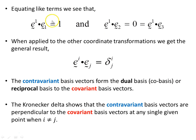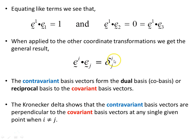Equating like terms, we see that e^1 · e_1 (upper index dotted with lower index) equals 1, and the others equal 0. Applying this to all other coordinate transformations, we get the general result that e^i · e_j equals the Kronecker delta δ^i_j. This is 1 when i equals j, and 0 when i does not equal j. So the contravariant basis vectors form the dual basis, or cobasis, or reciprocal basis to the covariant basis vectors. The Kronecker delta shows that the contravariant basis vectors are perpendicular to the covariant basis at any given point when i does not equal j.